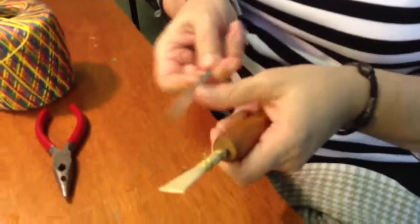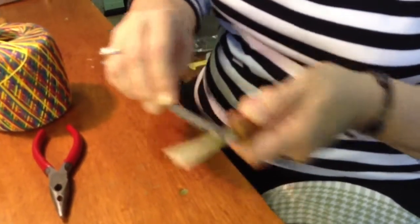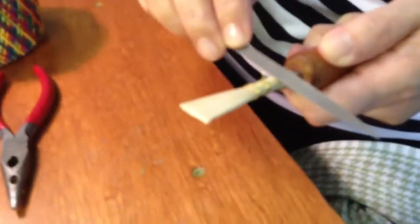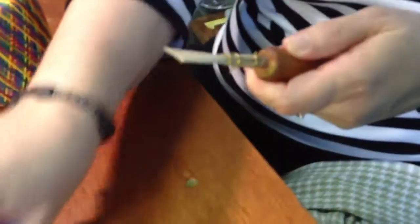So underneath, you put five hash marks. And we do this at a little bit of an angle, and then the thread has something to hold on to.